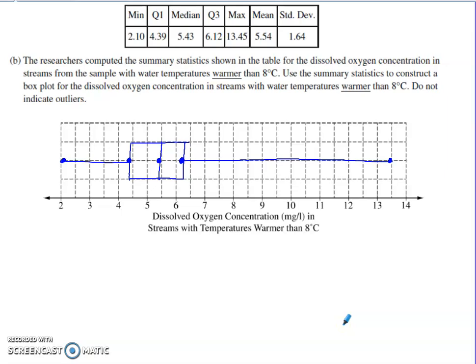Part B says we've got a similar situation going on, but these streams that we're dealing with now have water temperatures that are warmer than eight degrees Celsius. They present us with summary statistics for the warmer streams and simply say, use the summary statistics to construct a box plot for the dissolved oxygen concentration in these streams with the warmer temperature. It says do not indicate any outliers. We don't really know whether or not there are outliers. It doesn't really require us to spend time on that here, so we don't have to separate any outliers from the tails of this box plot.